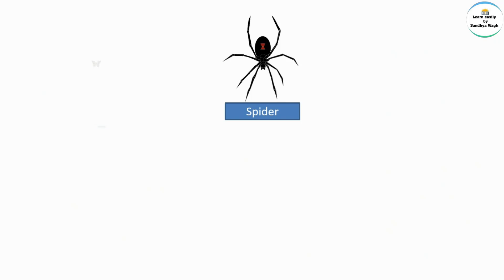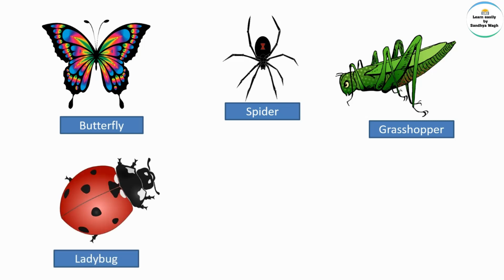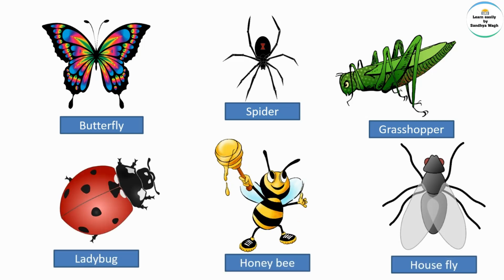Before we begin with the poem, I want you to have a look at this picture. What do you see in this picture? Yes, there are different types of insects like butterfly, spider, grasshopper, ladybug, honeybee, and housefly.